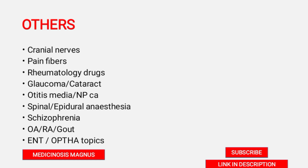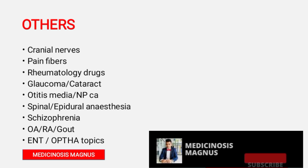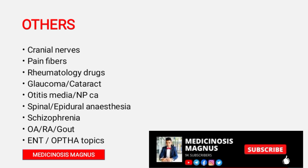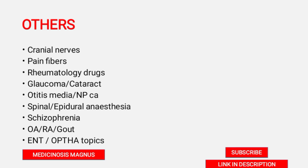In ENT and ophthalmology, please note the important topics because most questions — apart from the five main subjects — are from ENT and ophthalmology. For ENT, know about Meniere's disease, otosclerosis, and basic anatomy of the ear. In ophthalmology, know the types of conjunctivitis, cataract, and glaucoma. For both ENT and ophthalmology, know the most common causes — for example, most common cause of otitis media, otitis externa, and viral conjunctivitis.